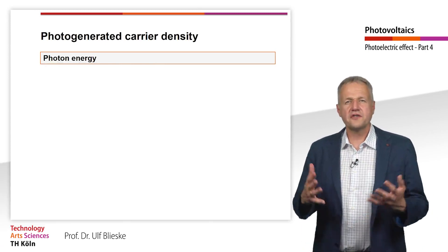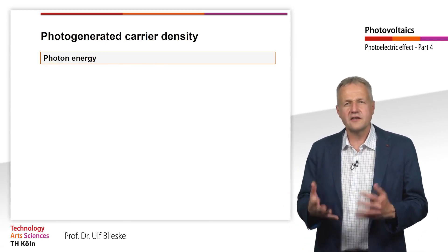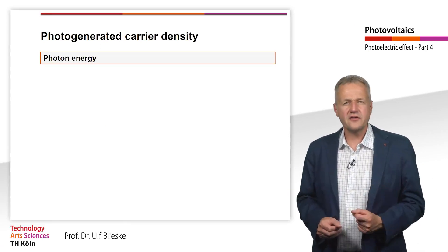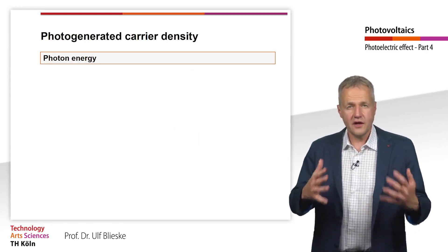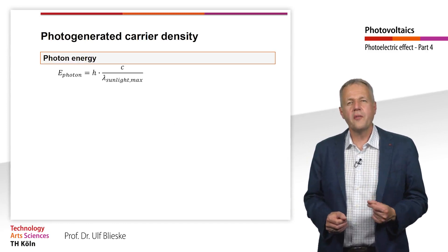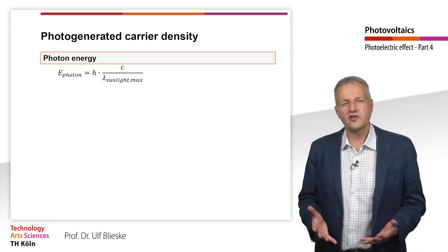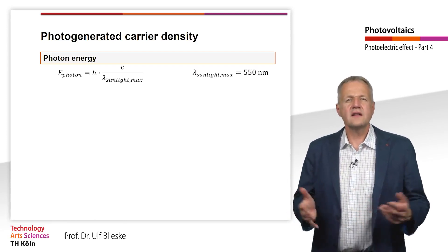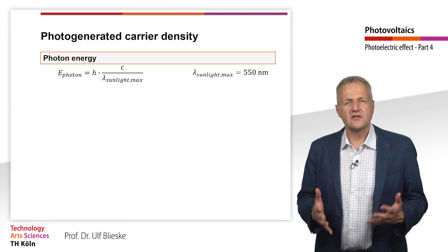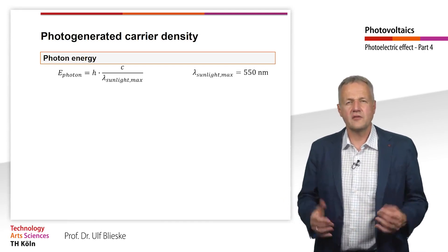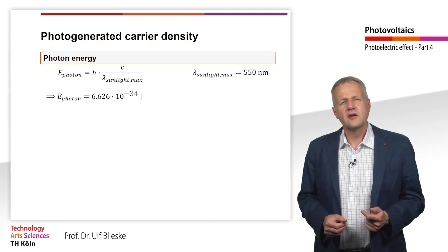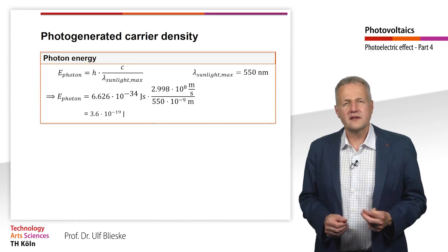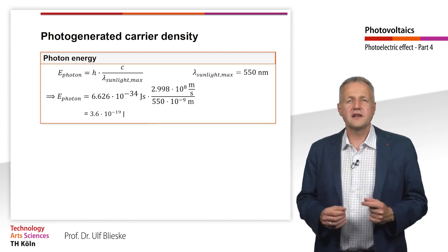To find out how the concentration of holes and electrons in the valence and conduction band changes due to the internal photoelectric effect, we must first calculate the energy of a photon. We use the formula linking photon energy to the corresponding wavelength of light. Inserting h, c, and the wavelength of 550 nm at which the solar spectrum has its radiation maximum, we get an average photon energy of 3.6 × 10⁻¹⁹ joules.